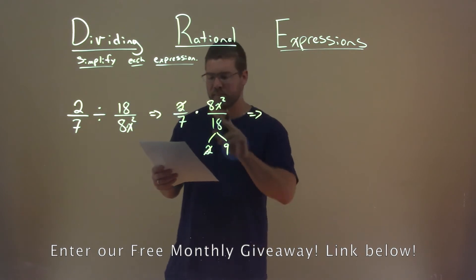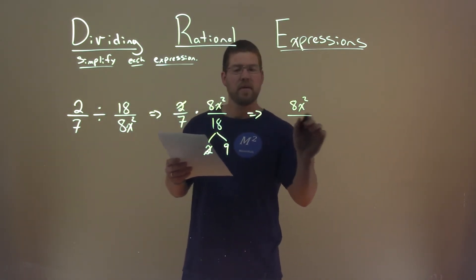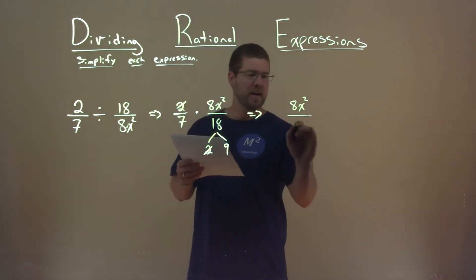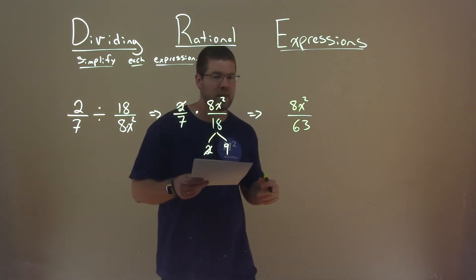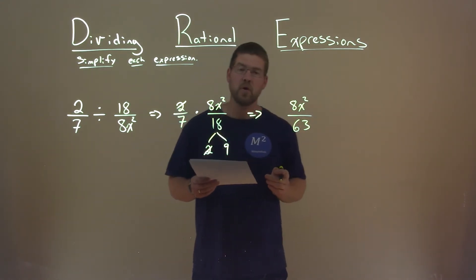Let's keep on going. The numerator, well, just 8x squared is left over. The denominator, we take the 7 and multiply it by this 9, gets us to 63. And so that's actually it. Our final answer is just 8x squared over 63.